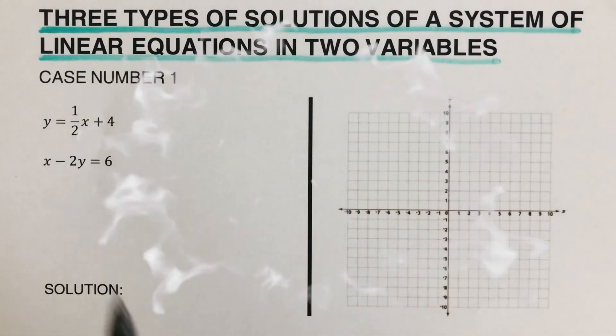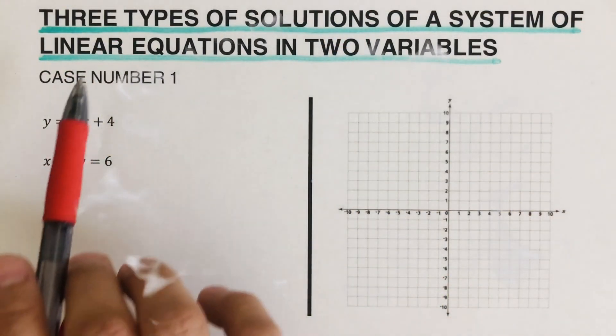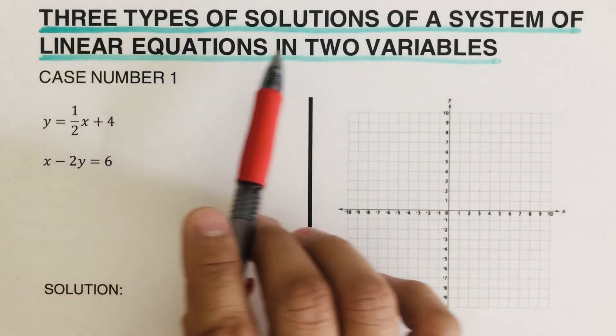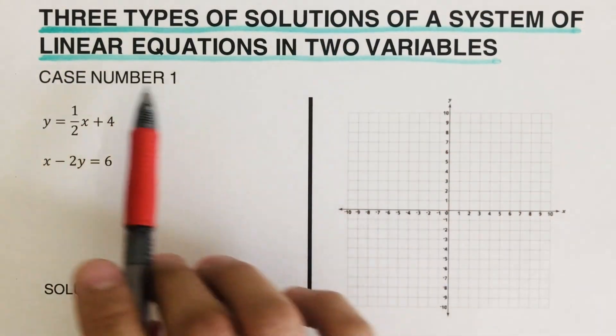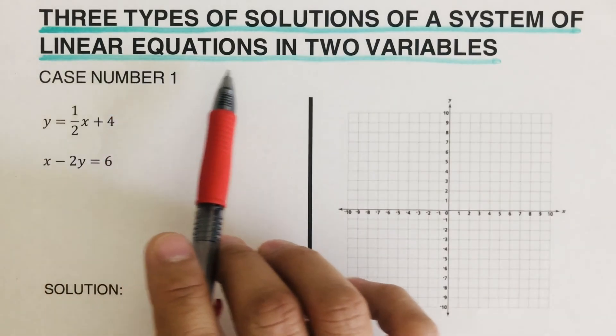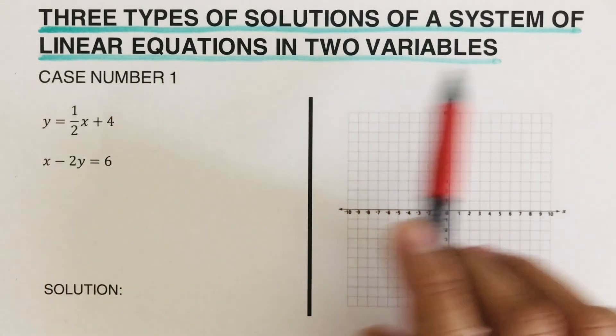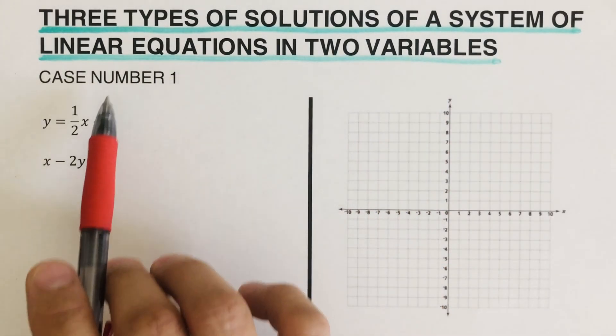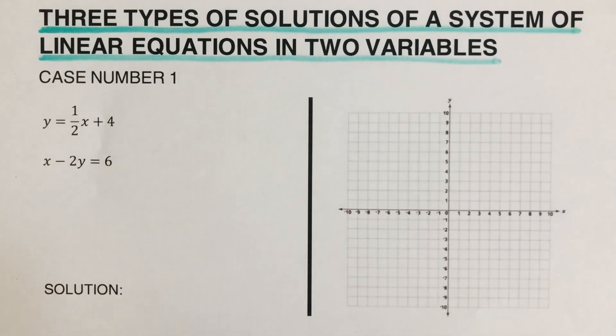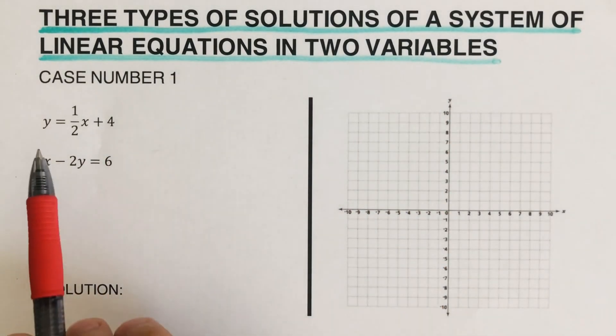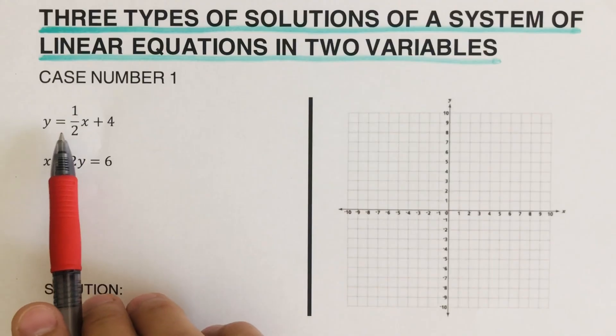Hello everyone. In this video we're going to look at the three types of solutions of a system of linear equations in two variables. We're going to have the first case in this slide, so we're given the equation y equals one half x plus four.